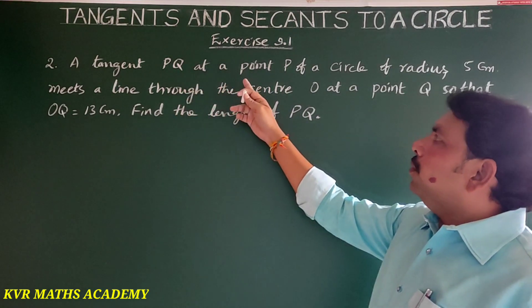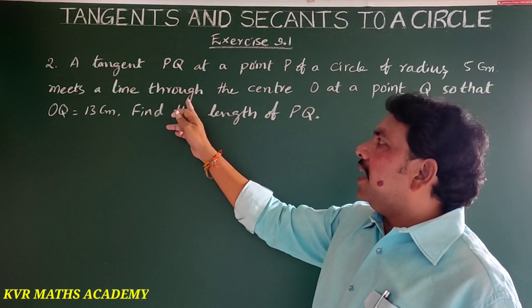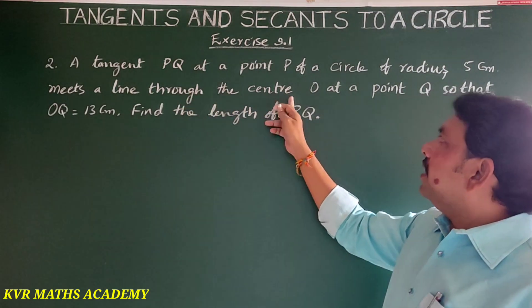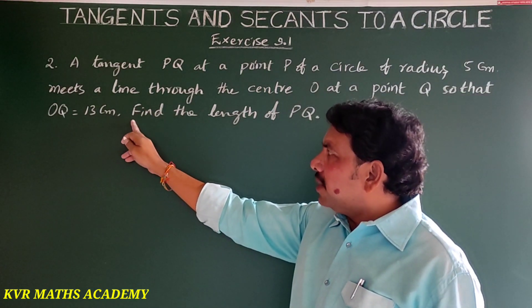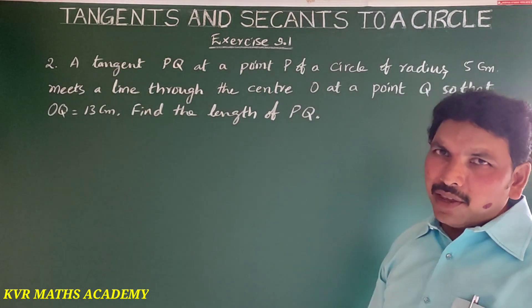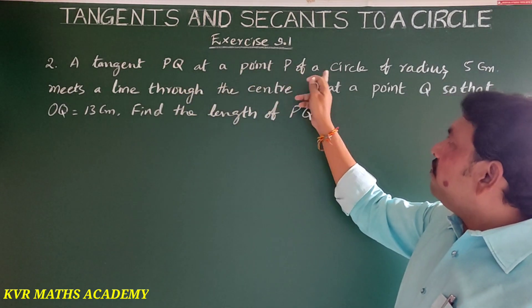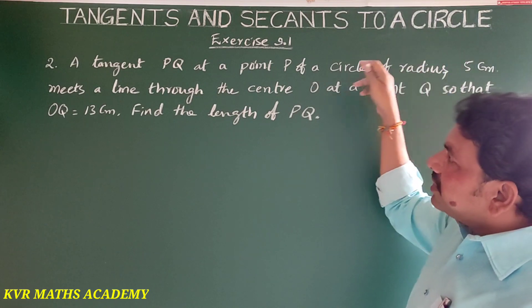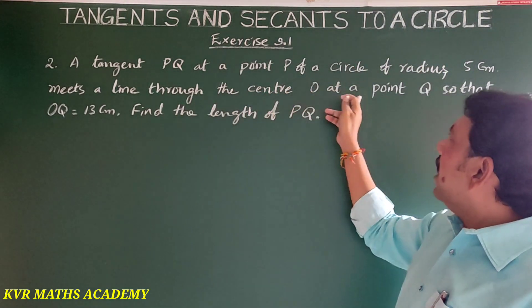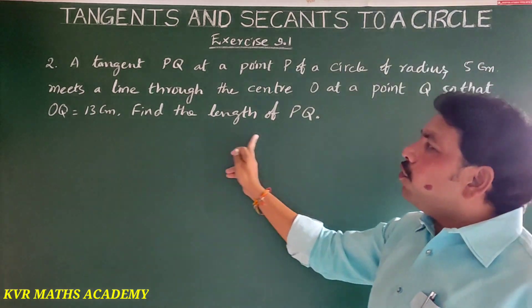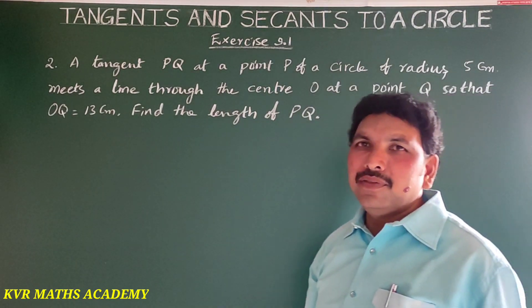Second question: a tangent PQ at a point P of a circle of radius 5 centimeters meets a line through the center O at a point Q, so that OQ is equal to 13 centimeters. Find the length of PQ.